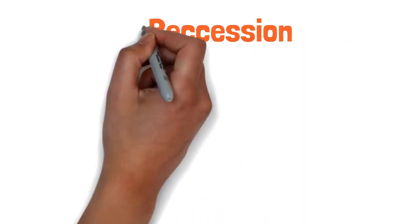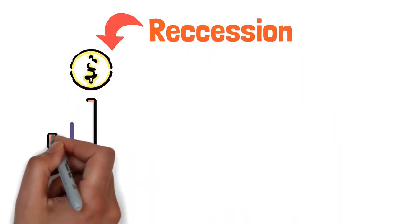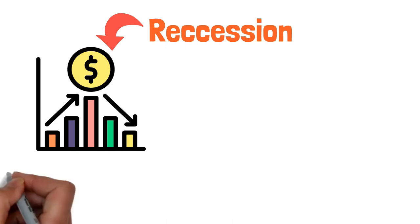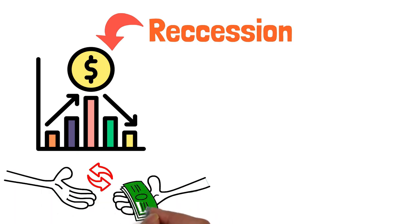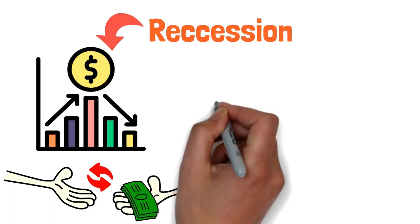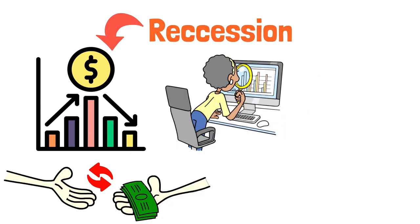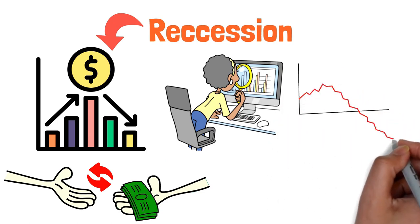One of the defining characteristics of recessions is a profound decline in stock prices as fear grips the market and investors rush to offload their holdings. This mass exodus often creates an environment ripe for bargain hunting, with valuations reaching levels that significantly undervalue the intrinsic worth of many companies.